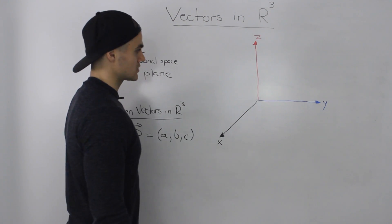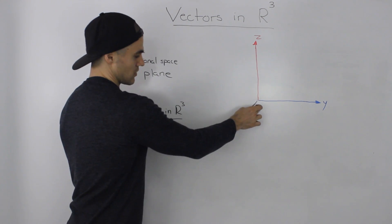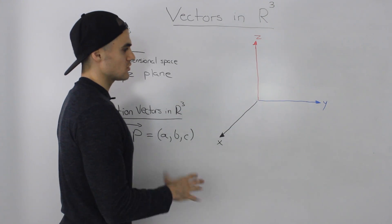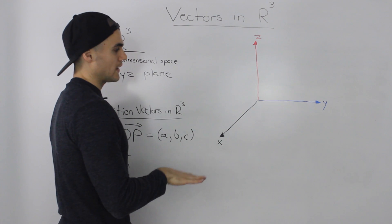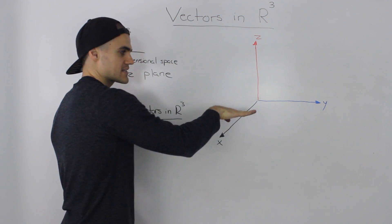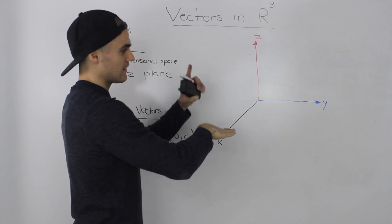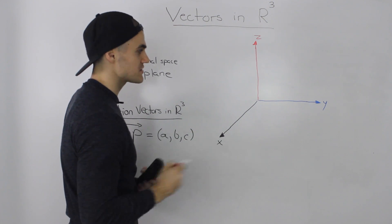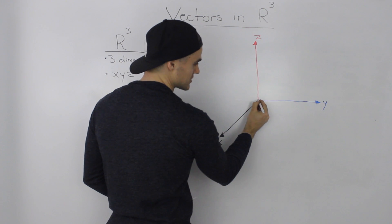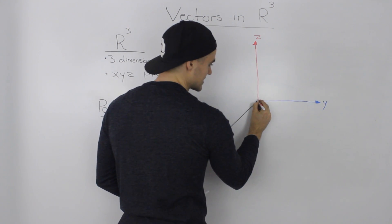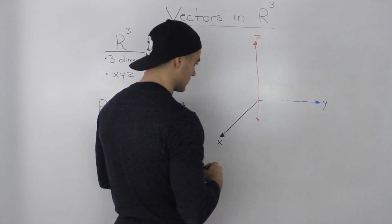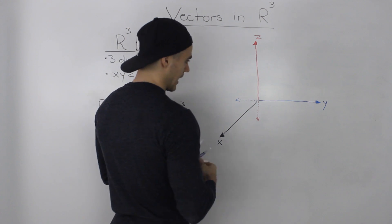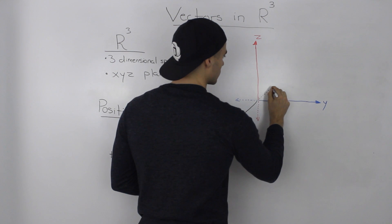So this is how an xyz plane looks. The x-axis is represented by this black line, the y-axis is represented by the blue line, and the z-axis is represented by the red line. You have to try to visualize this in a 3D way. The xy plane represents a floor, and then perpendicular to that, sticking out of that floor, is the z-axis. The parts of the axis drawn here only represent the positive parts. The negative part of z would be represented by the dotted line here, the negative part of y here, and the negative part of x would stick out over there.